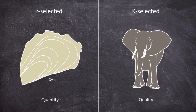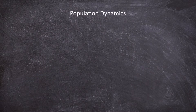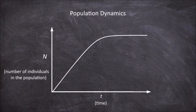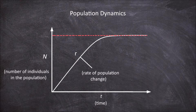The terms R selected and K selected are based on the model of population dynamics. In population dynamics we look at the number of the population N over time T. In this relationship we can look at the rate of change in the population R. We can also look at where the population reaches its maximum capacity, also known as the carrying capacity K.